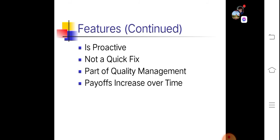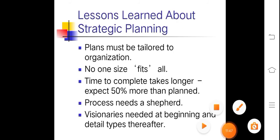Strategic management is not a quick fix — there is no permanent or long-lasting solution that is easy to achieve. It is part of quality management, which includes quality planning, quality assurance, and quality improvement. The payoffs for the company must increase over time.